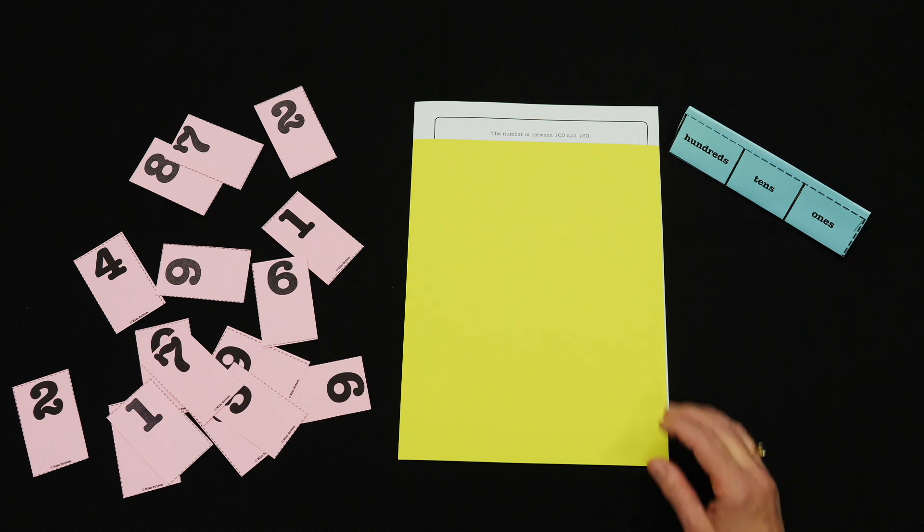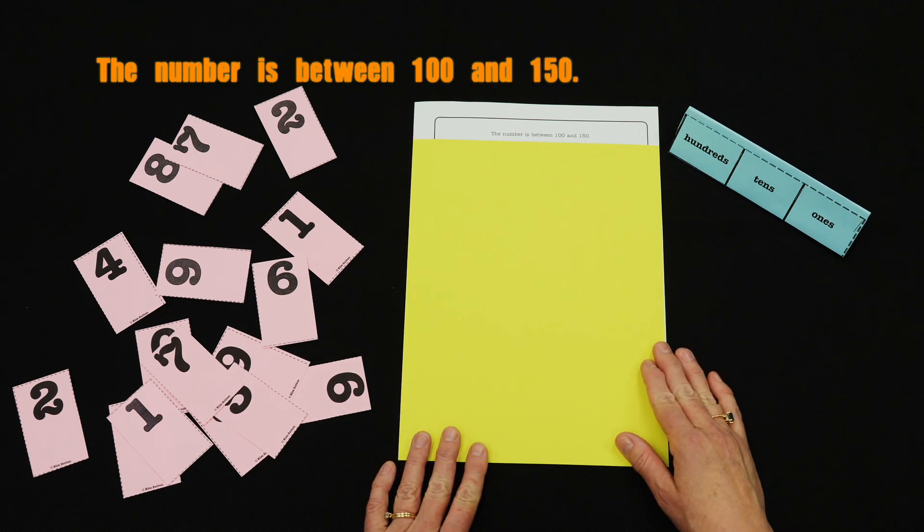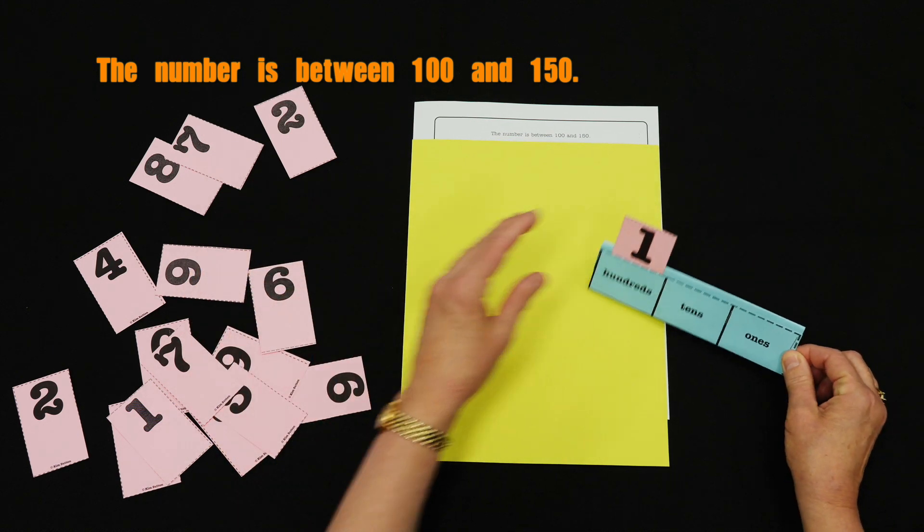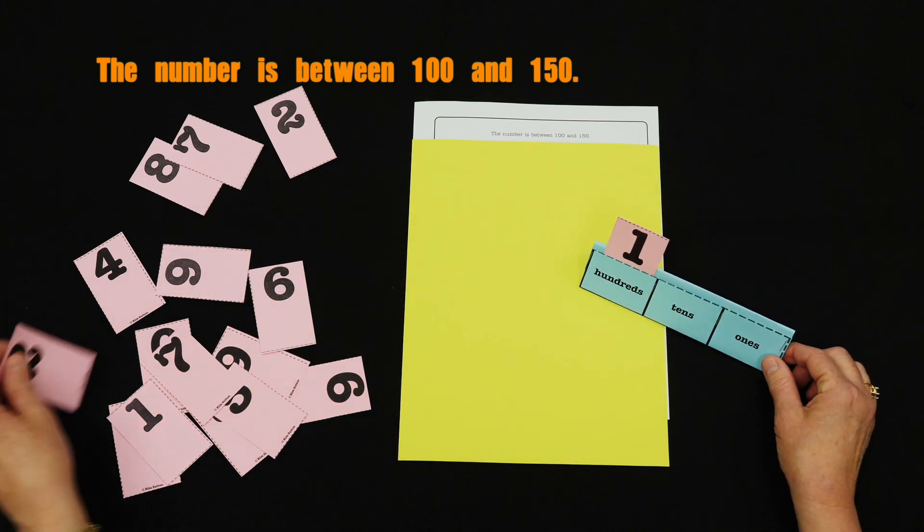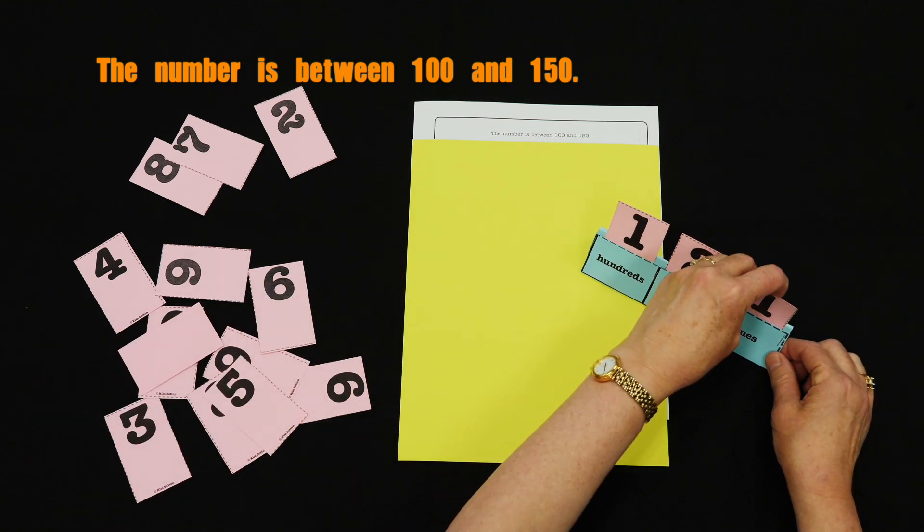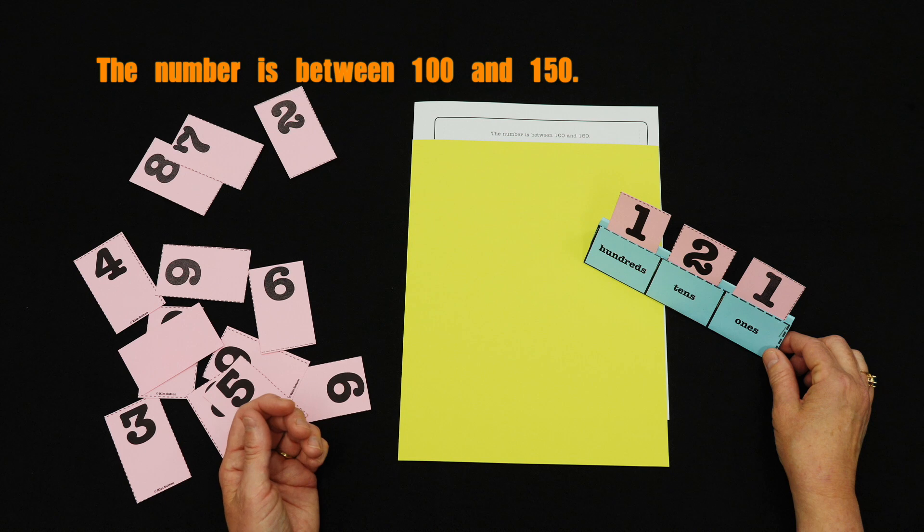The teacher would reveal the clues and the students would build as the clues are revealed. The first clue is the number is between 100 and 150. So the child would build a number following that clue. The teacher would say one, two, three, show me.